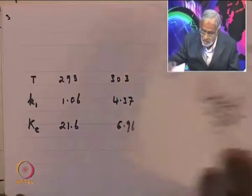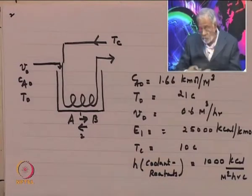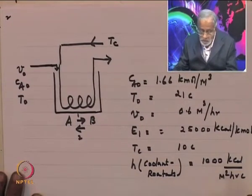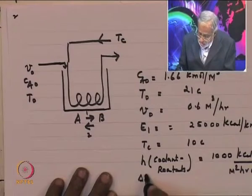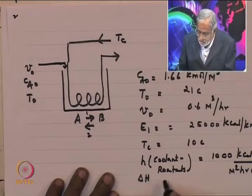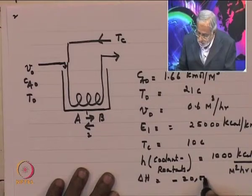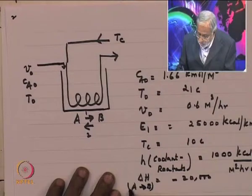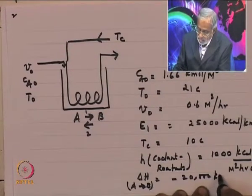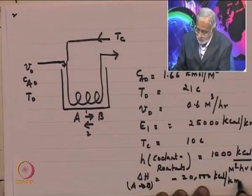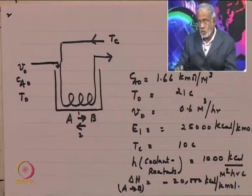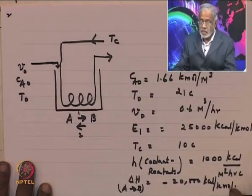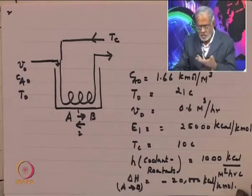The heat of reaction delta H is minus 20,000 kcal per kmol, so this is a reversible and exothermic reaction. We know that for a reversible exothermic reaction, there is a maximum reaction rate at some conditions. The first part of the exercise is to derive the locus of maximum rates.